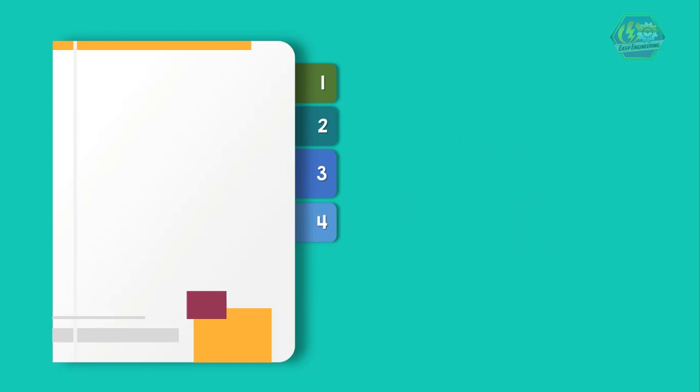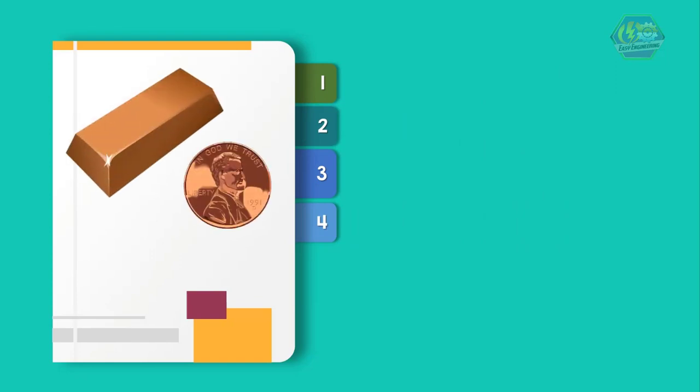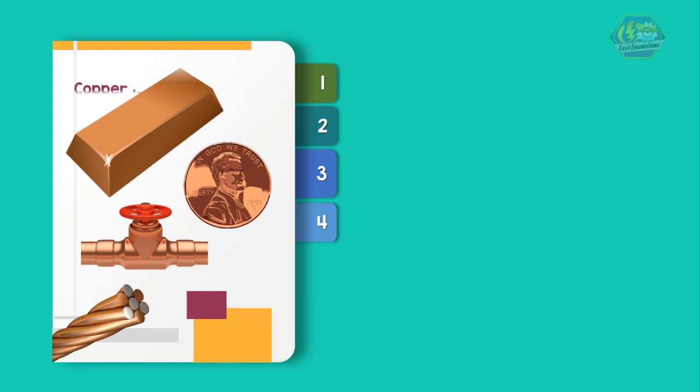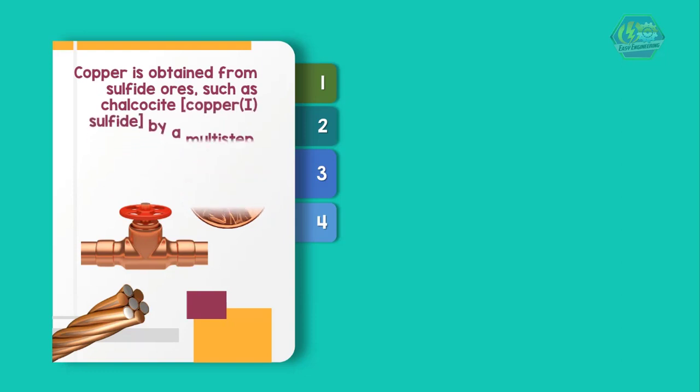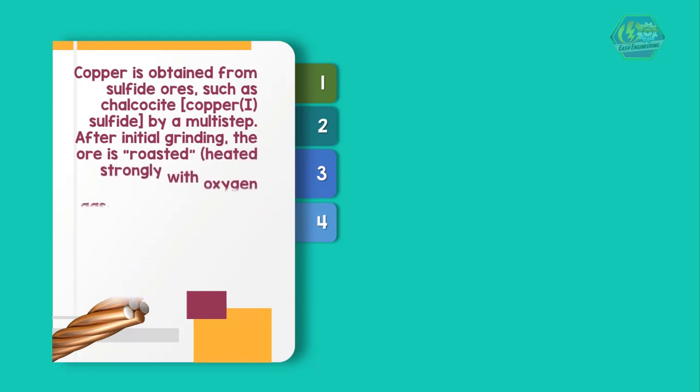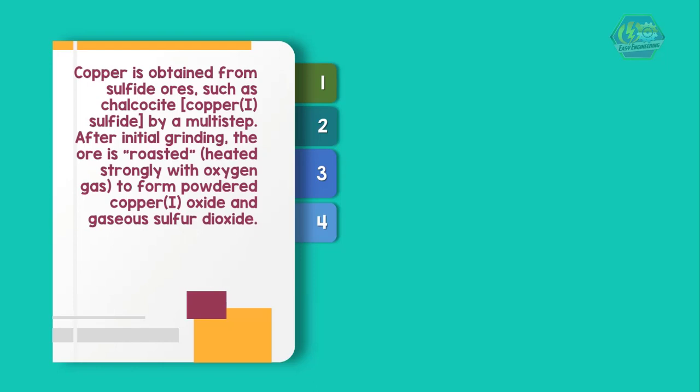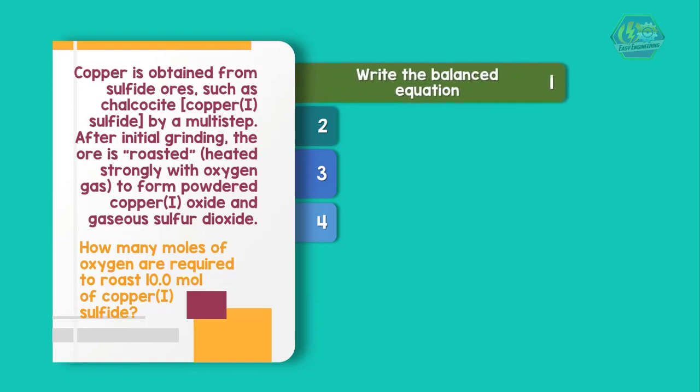Let us apply this by solving a problem. In a lifetime, the average American uses more than half a ton of copper in coins, plumbing, and wiring. Copper is obtained from sulfide ores such as chalcocite by a multi-step process. After initial grinding, the ore is roasted or heated strongly with oxygen gas to form powdered copper(I) oxide and gaseous sulfur dioxide. The question is: how many moles of oxygen are required to roast 10 moles of copper sulfide?